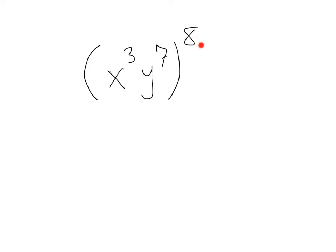Remember, we want to multiply our exponents when we have more than one. So let's start with our x. Here we have x to the third to the eighth power. That's going to be x to the 3 times 8 or x to the 24.